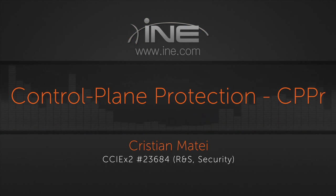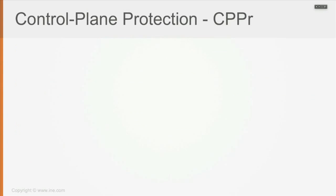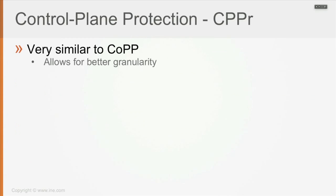A variation of CoPP is called Control Plane Protection, or CPPr. It is very similar to CoPP but allows for better granularity.